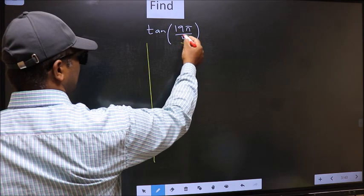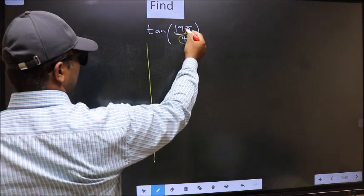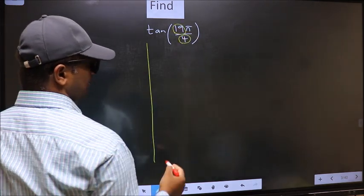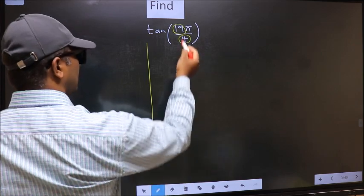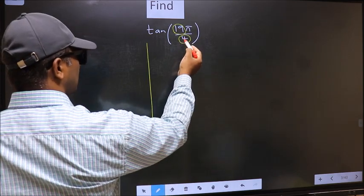In the denominator, we have 4. In the numerator, 19. Now you should check, 19 is close to which multiple of 4.